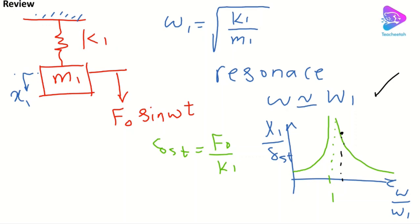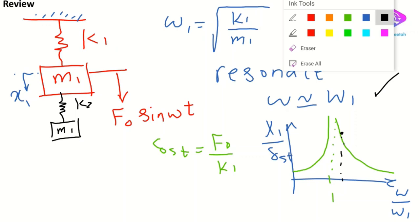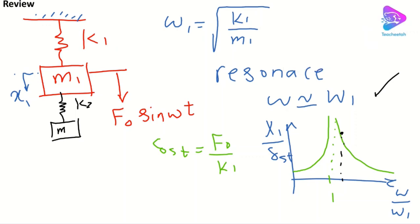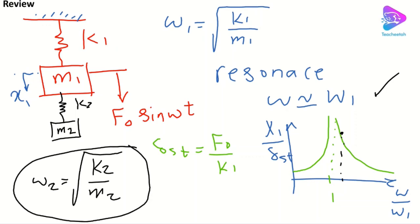The vibration absorber is essentially just a mass-spring system attached to our main system. We add an additional spring k2 and a small mass m2. By adding this mass-spring system we want to reduce or absorb the vibration. We define ω₂, the natural frequency for the second mass-spring system, as ω₂ = √(k2/m2) — keep that in mind as the natural frequency for the absorber component.